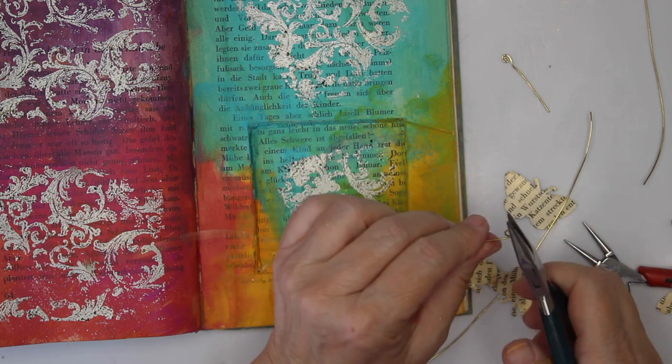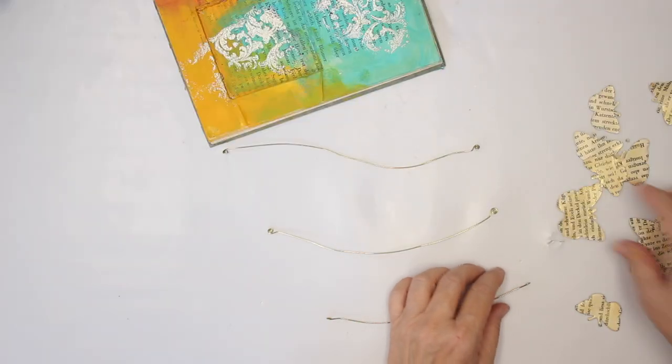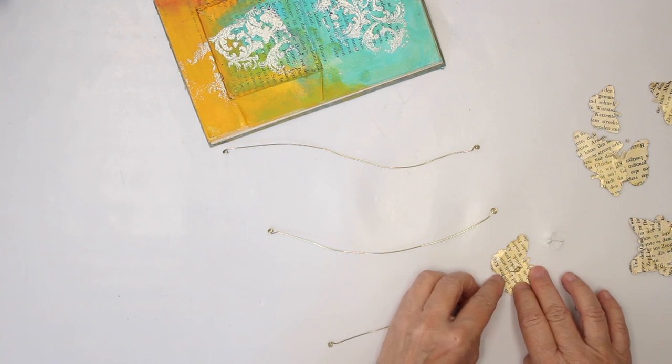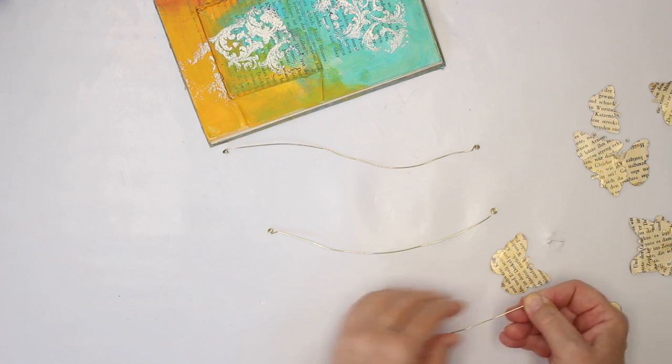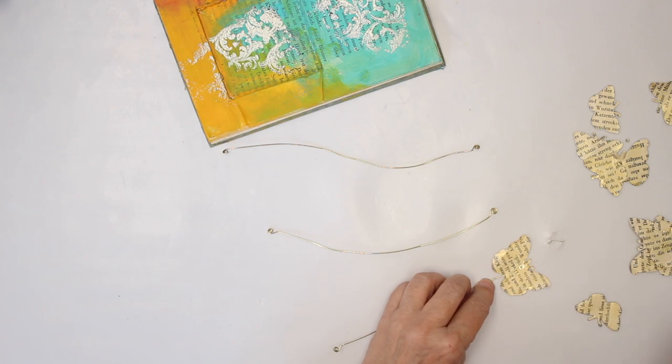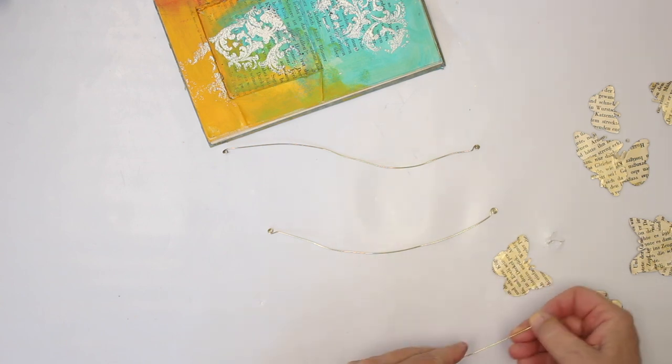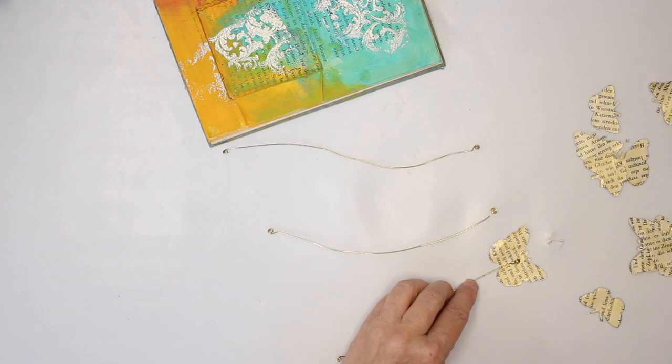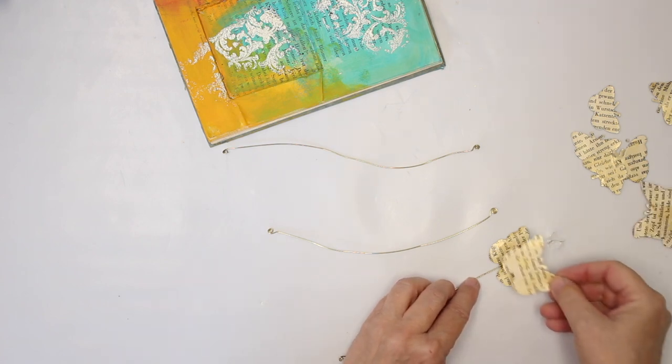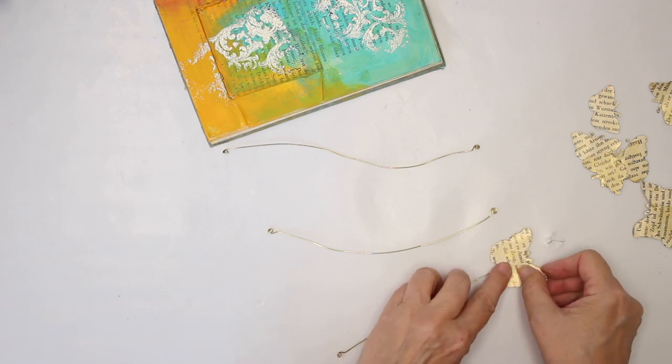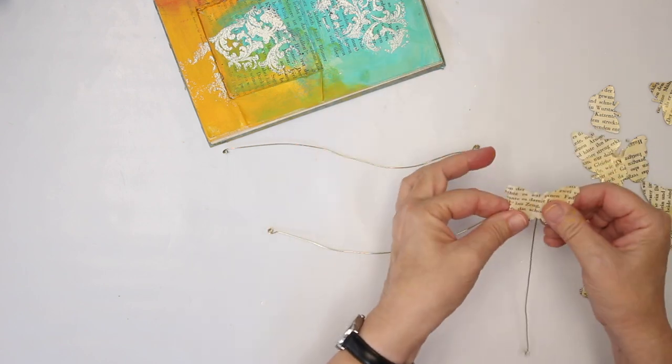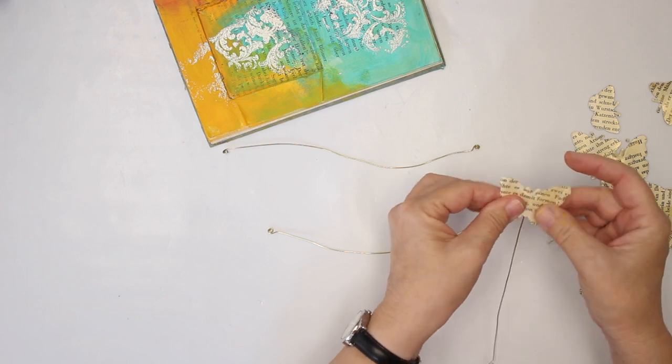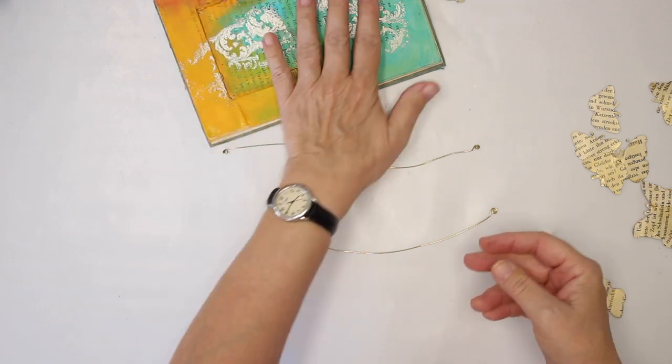I will be back when I have all three wires ready to go. Now I'm gonna attach the wire to the butterflies with hot glue. And that's why I need it somewhat straight so that I have a good contact. And I'm gonna cover it with the second butterfly. Watch out, it is hot. So here we have the first to go in our book.